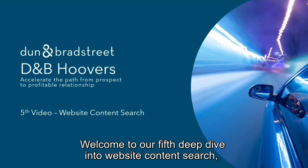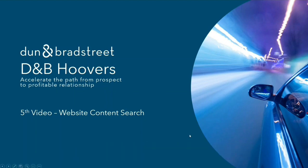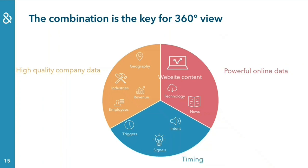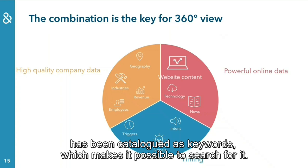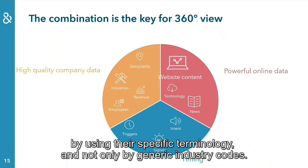Welcome to our fifth deep dive into website content search, which increases the relevancy of the funnel. DMP crawled more than 30 million company websites in more than 100 languages. The content on the company website has been cataloged as keywords, which makes it possible to search for it. This enables users to find companies in the way they are describing themselves by using their specific terminology and not only by generic industry codes.